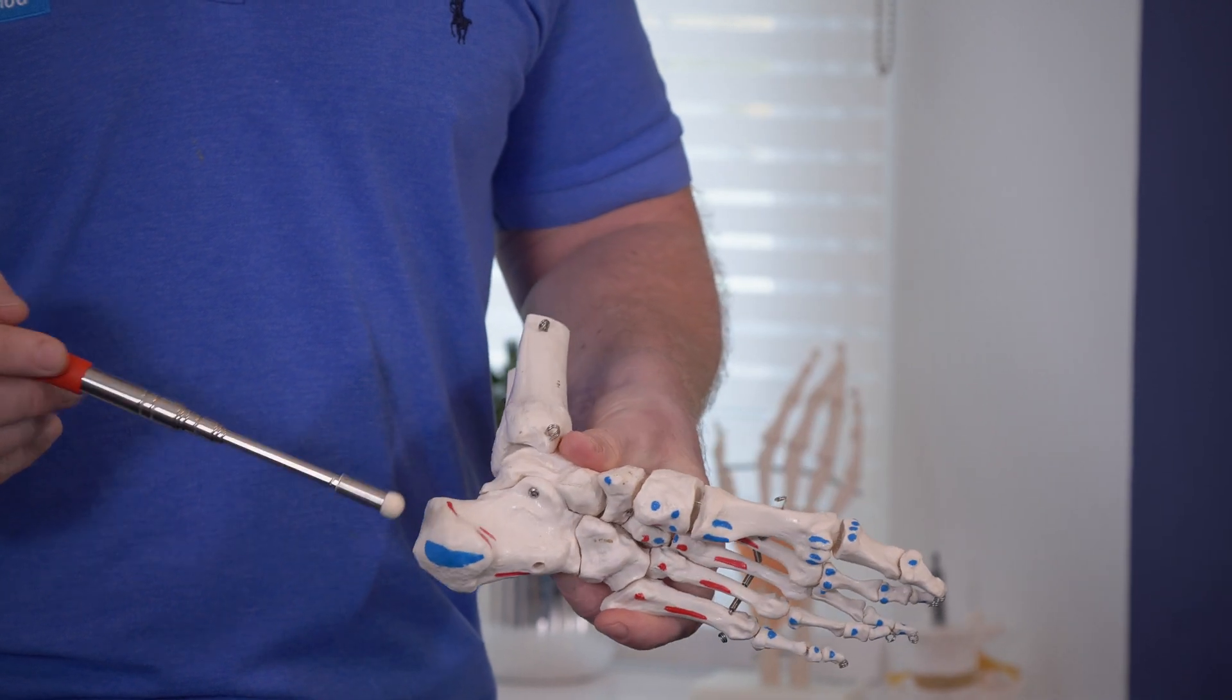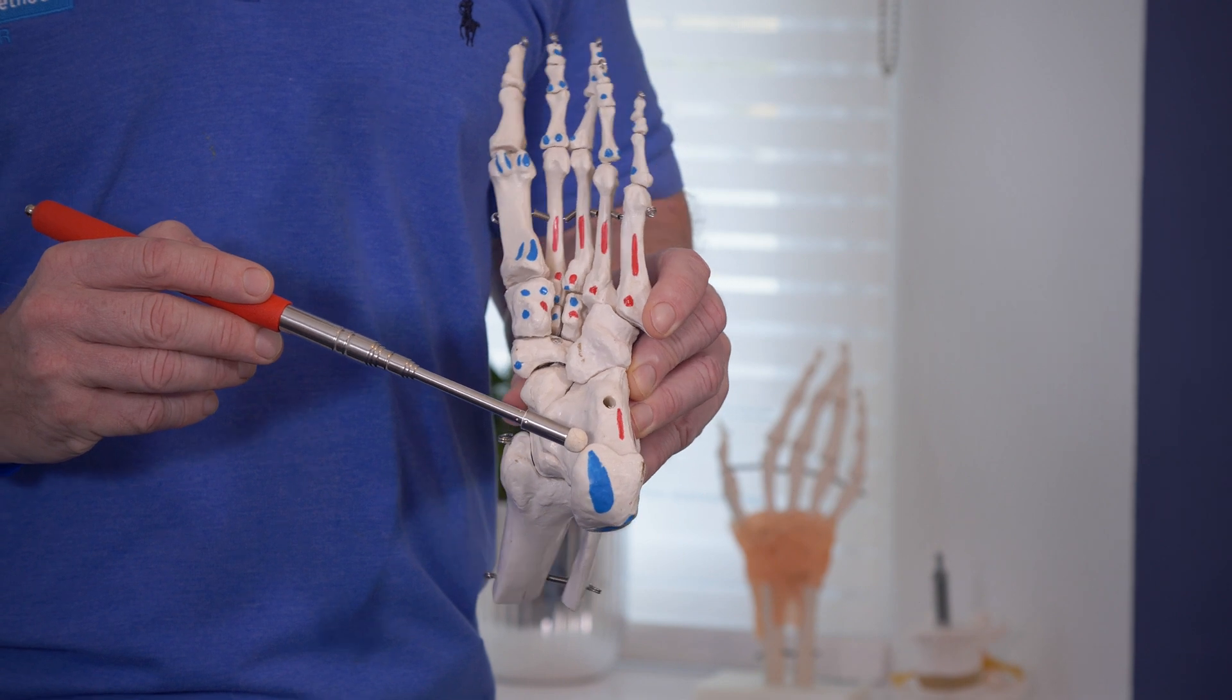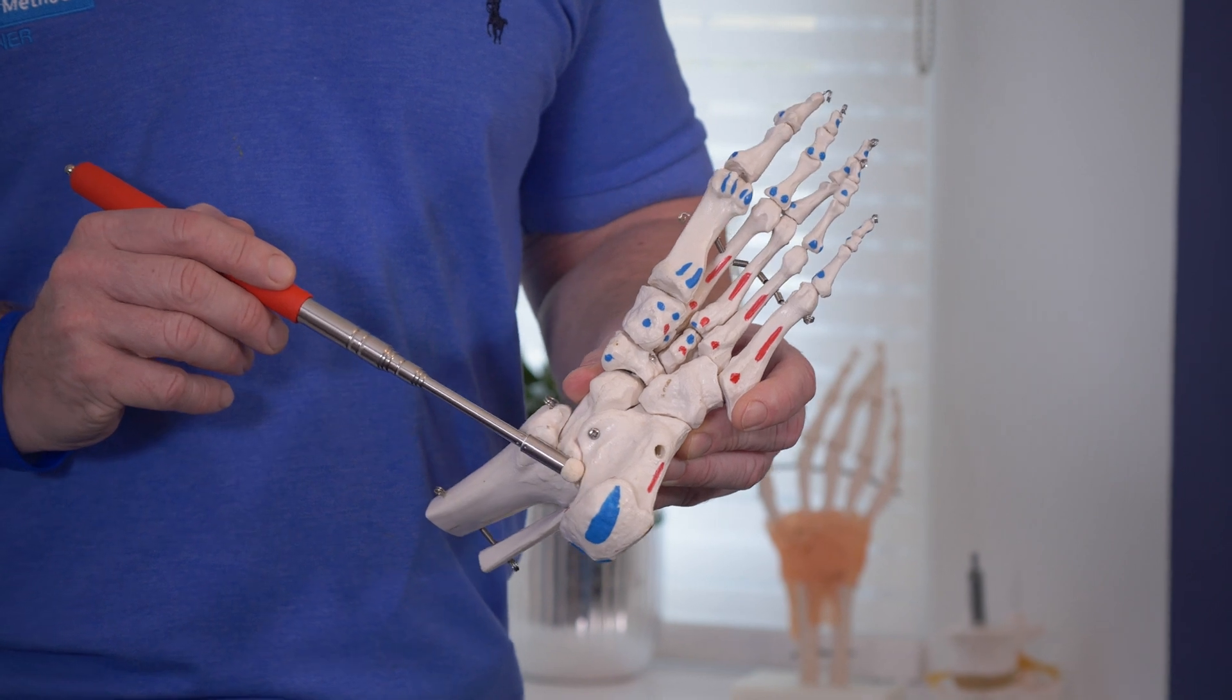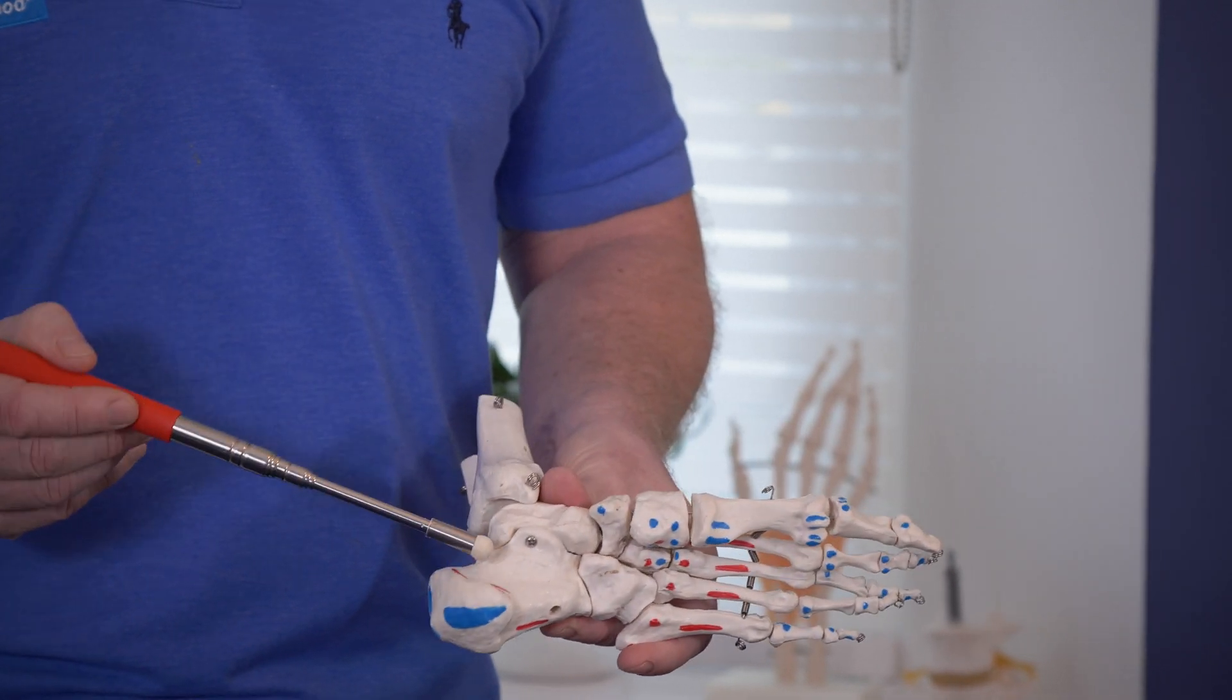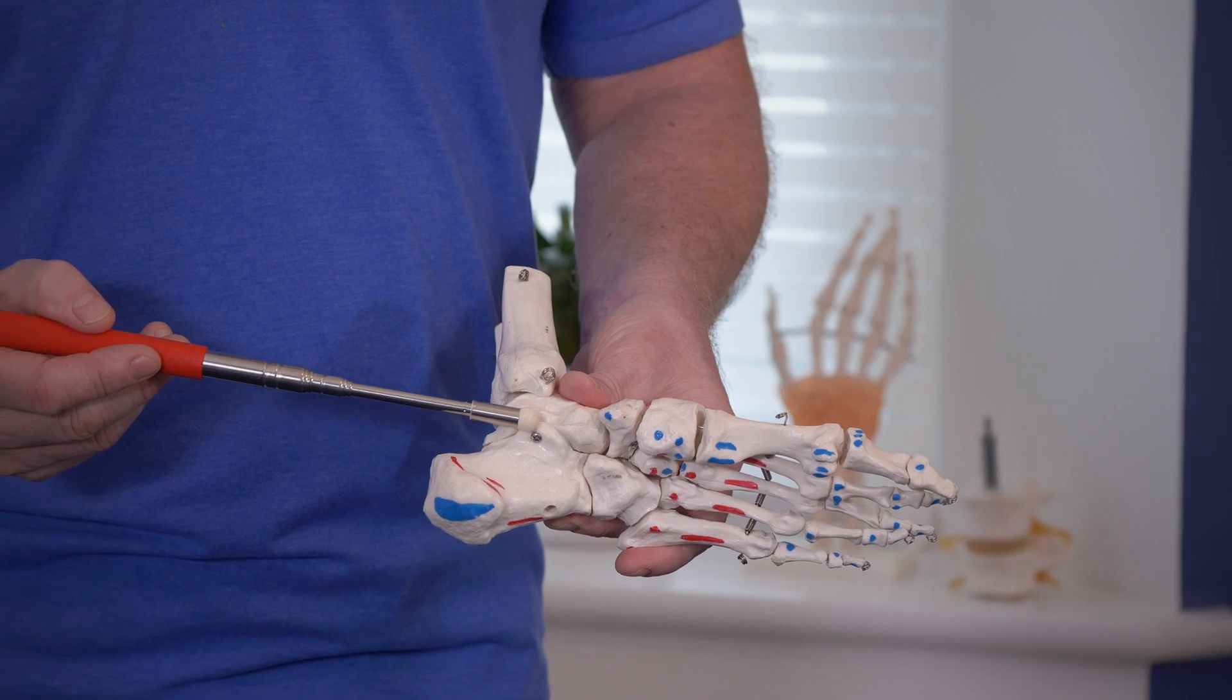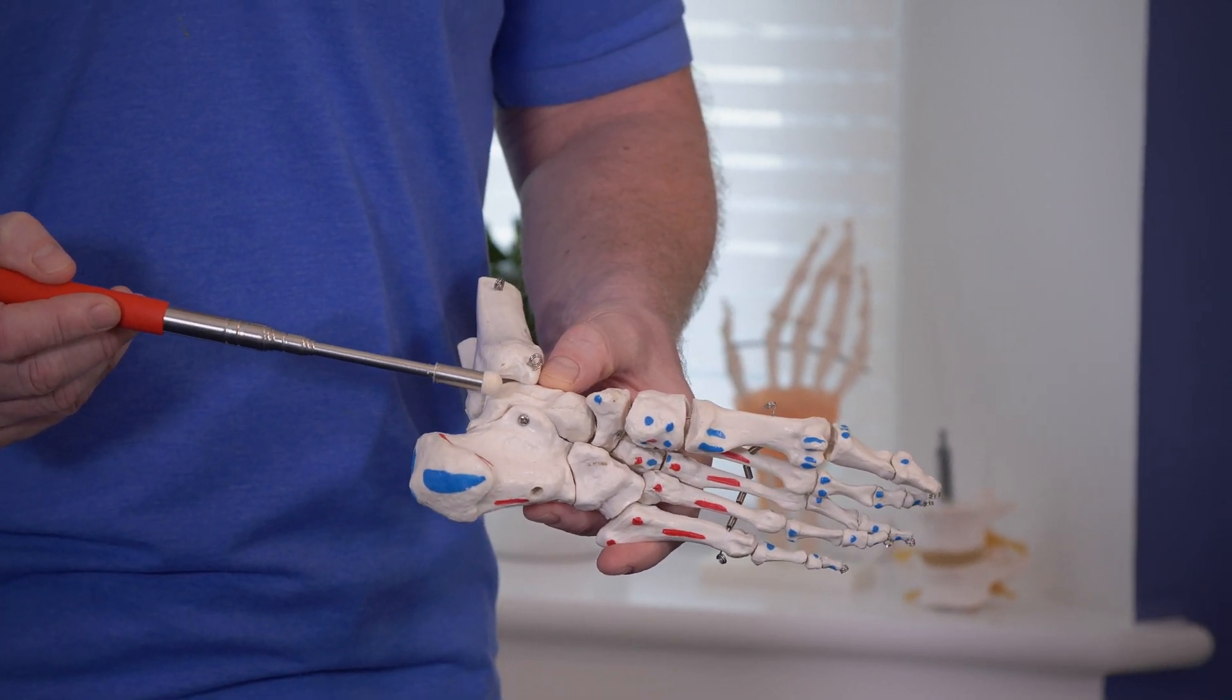There is actually a bony landmark on this medial side called the calcaneal tuberosity just here, and that will be where the plantar fascia will attach on this area. Also on the medial side, there is an area just here where the next bone, called the talus, will sit, and this area is known as the sustentaculum tali.